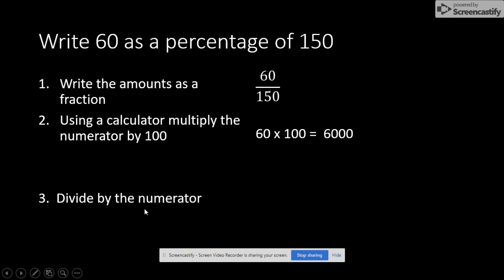Then you divide by the numerator. So you divide by 150. So 6,000, that was our answer, divided by 150 gives us 40, which tells us that's 40%. So 60 is 40% of 150.